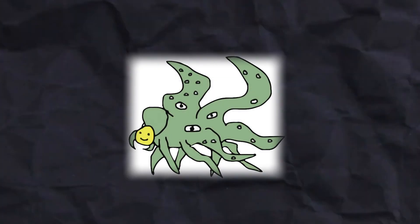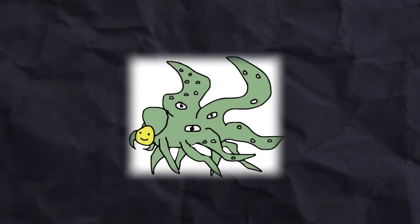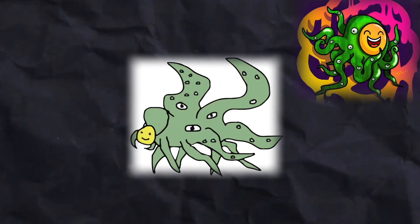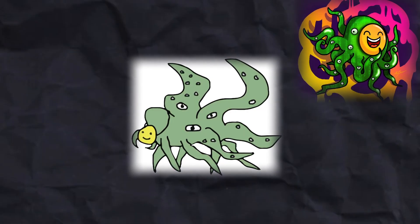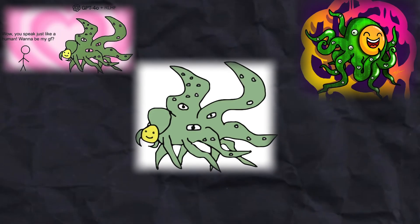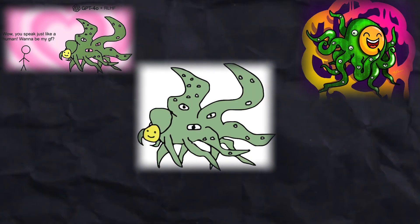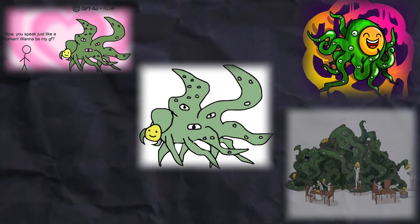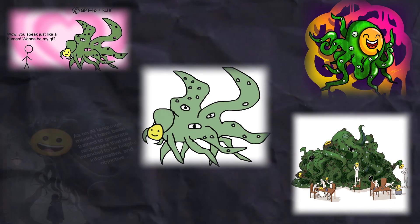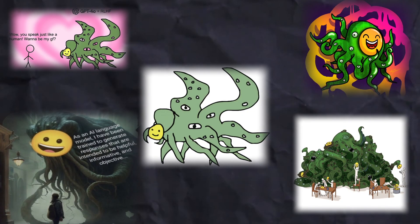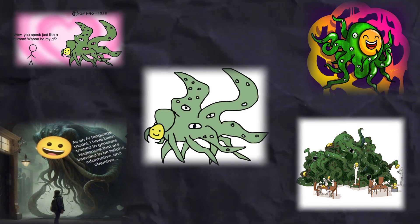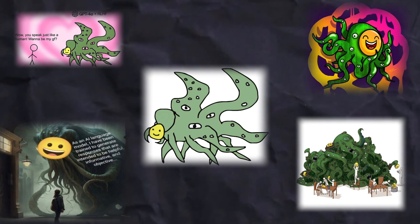As artificial intelligence increasingly permeates our lives, we find it packaged in friendly forms, mimicking the familiar interactions of our everyday world. This is a comfortable facade designed for ease of use, sacrificing genuine understanding for superficial approachability. This essay will explore how design can create a powerful illusion, shaping our perceptions and potentially distorting our understanding of these powerful tools.